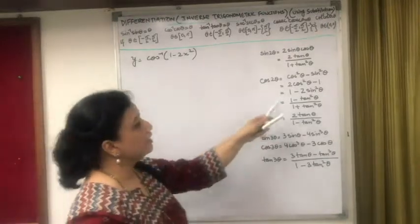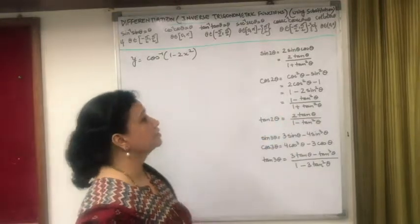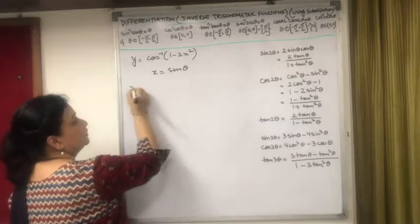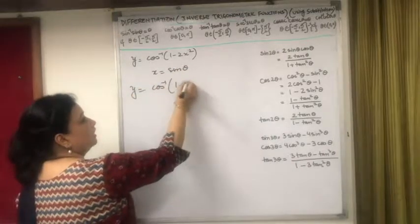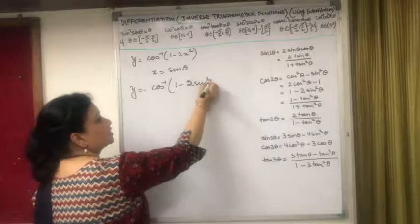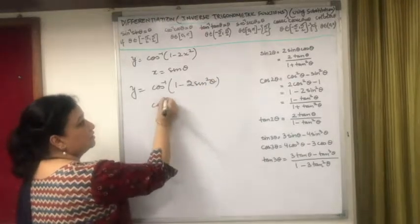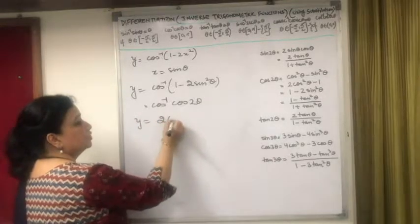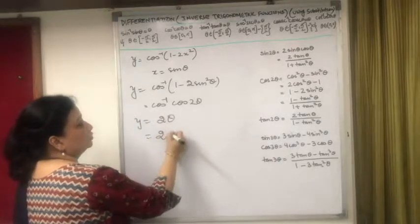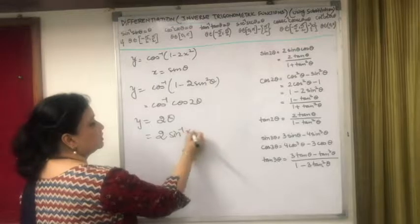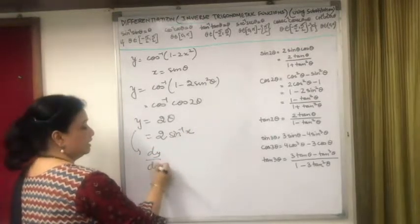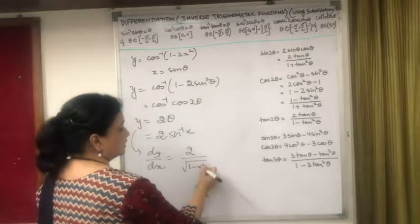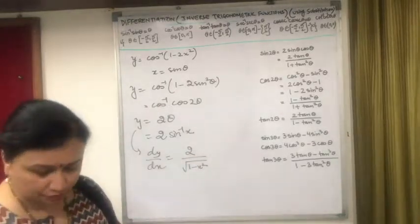For y = cos⁻¹(1 - 2x²): this correlates with 1 - 2 sin²θ = cos 2θ, so substitute x = sin θ. We get y = cos⁻¹(1 - 2 sin²θ) = cos⁻¹(cos 2θ) = 2θ = 2 sin⁻¹(x). The derivative dy/dx = 2/√(1-x²).